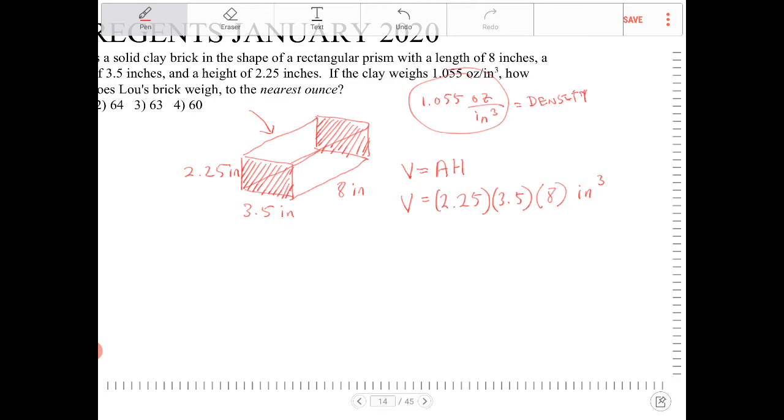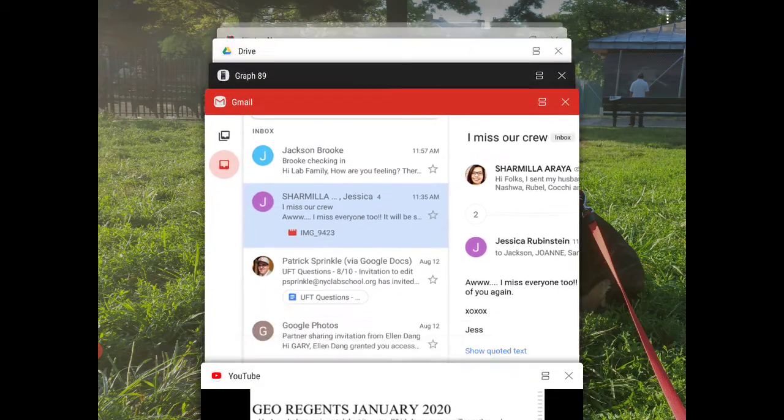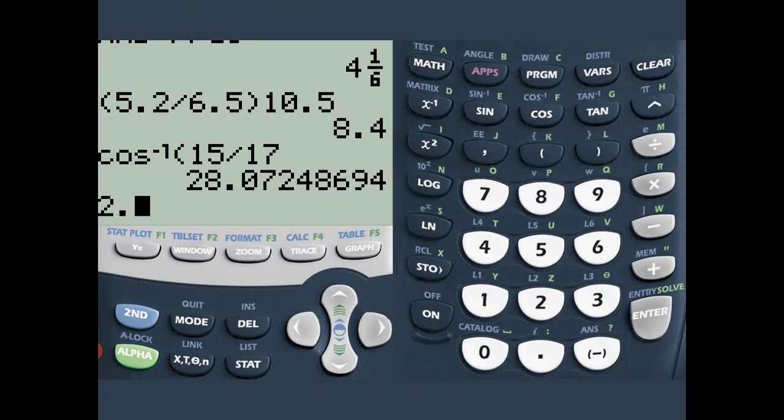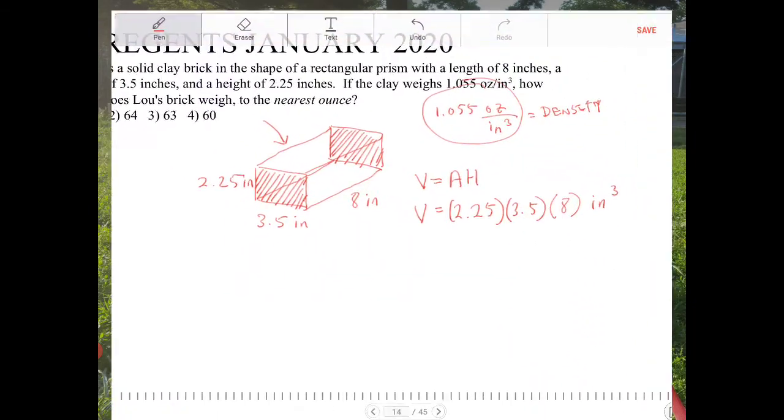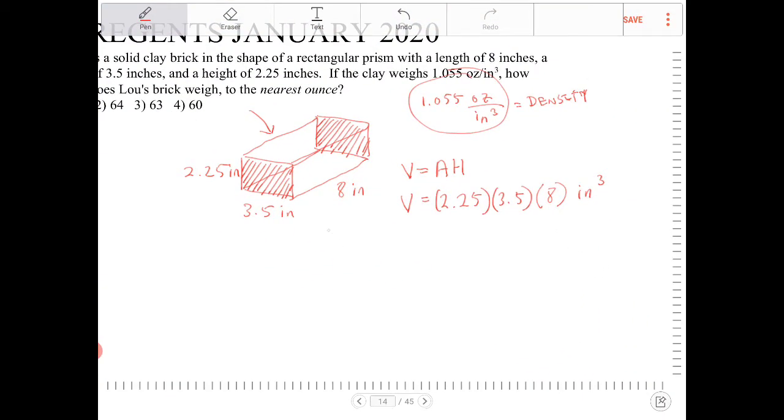2.25, so I'm gonna get my calculator, 2.25 times 3.5 times 8, and that's 63. So I'm gonna have the volume of the brick of 63 inches cubed.